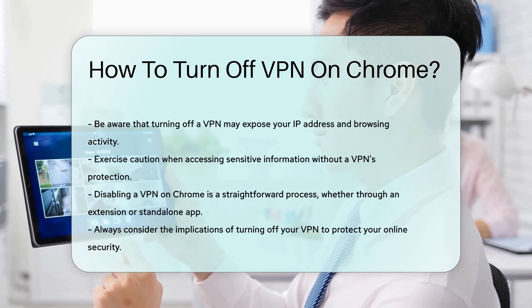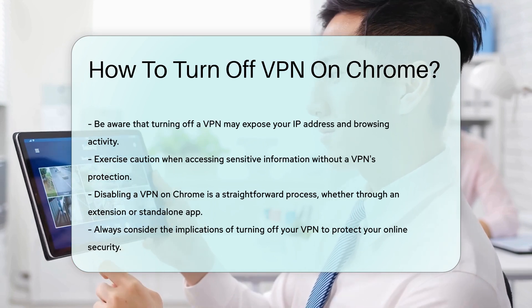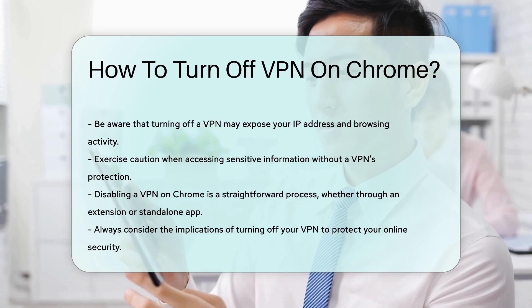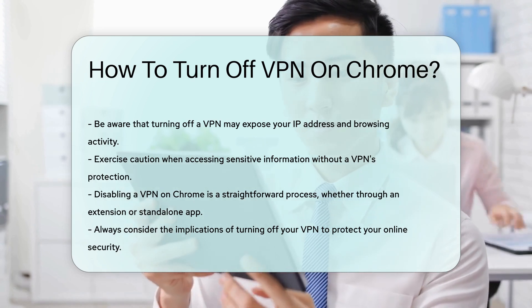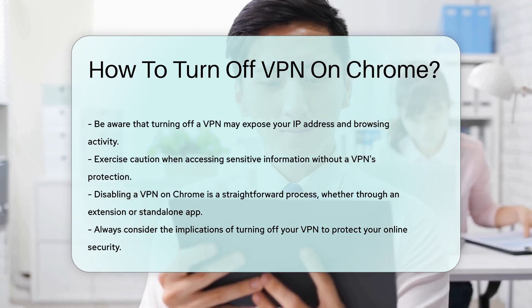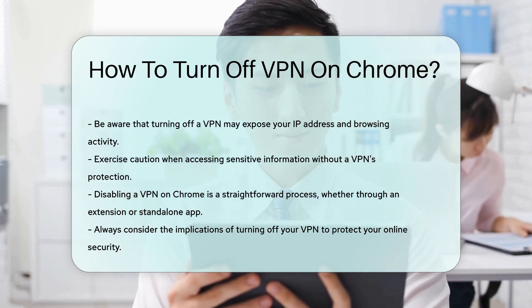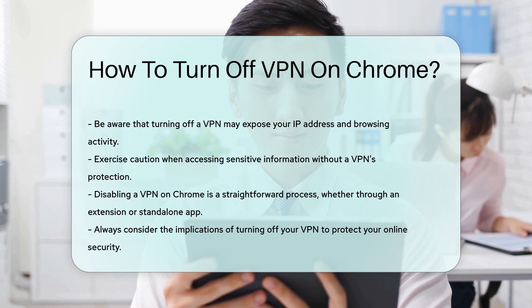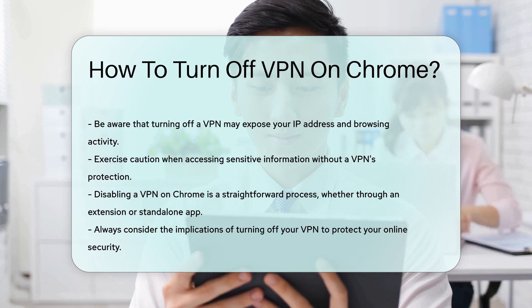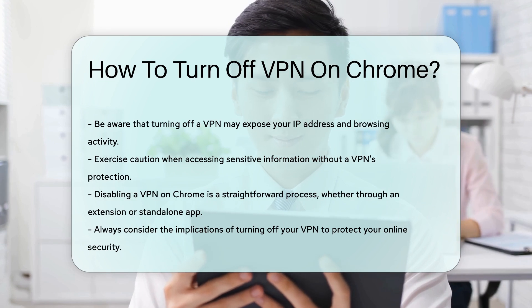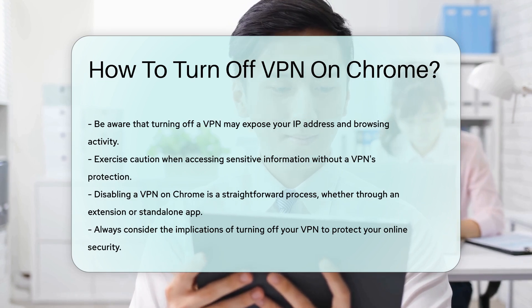Always be cautious when accessing sensitive information without the added layer of protection that a VPN provides. In conclusion, disabling a VPN on Chrome is straightforward, whether through an extension or a standalone application. Always ensure that you are aware of the implications of turning off your VPN to maintain your online security.